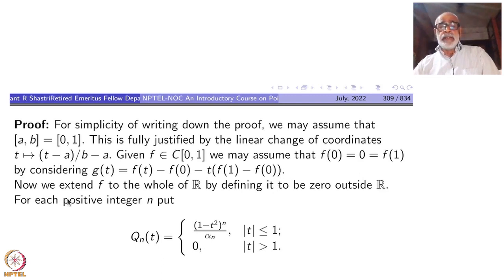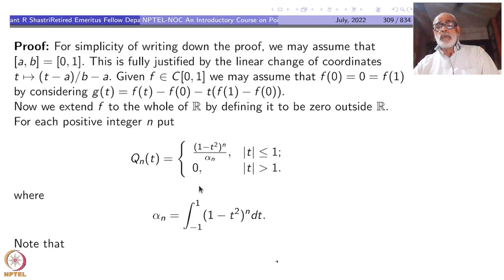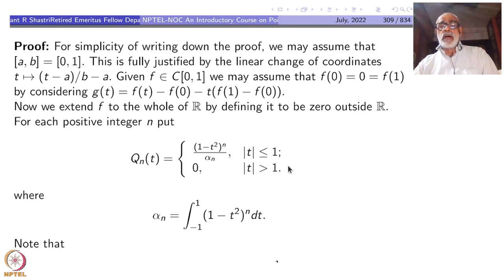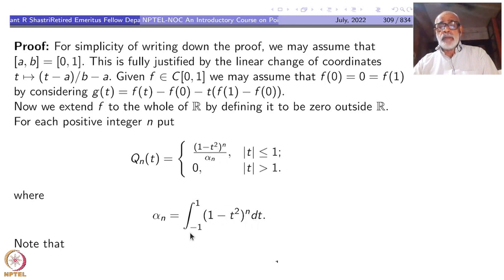The advantage is that we can extend f to all of R by defining it to be 0 outside the interval [0,1]. For each positive integer n, put Q_n(t) = (1 minus t²)^n divided by alpha_n, for |t| ≤ 1, and 0 outside. When t equals 1 or minus 1, the numerator is 0, so Q_n is continuous on all of R. The constant alpha_n is a normalizing factor.